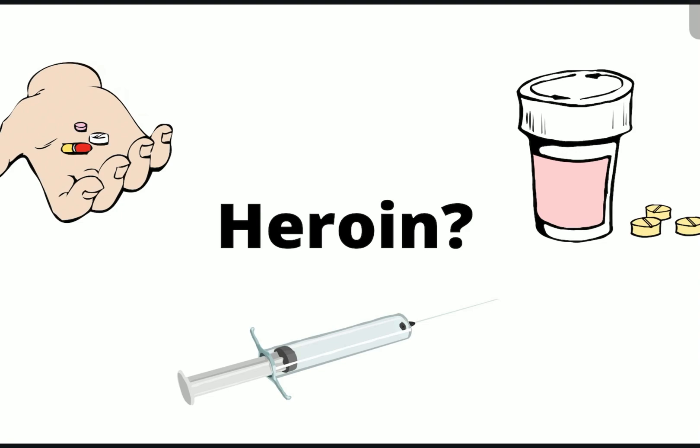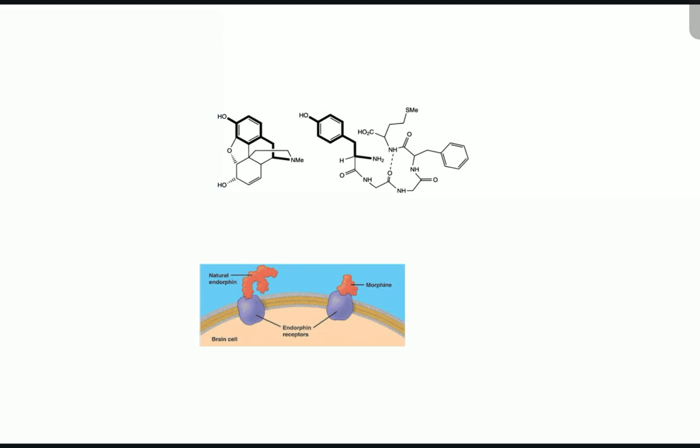What about heroin? Why do we feel happy with reduced sensation of pain and elevated mood when we take heroin? We talked about specific shapes of receptor molecules and neurotransmitters. In our body, we have naturally occurring endorphins.